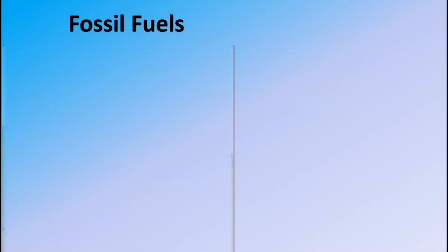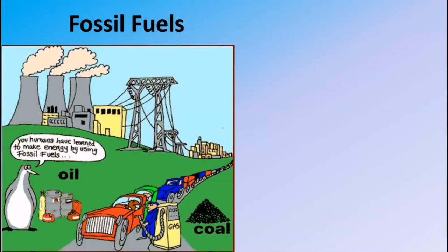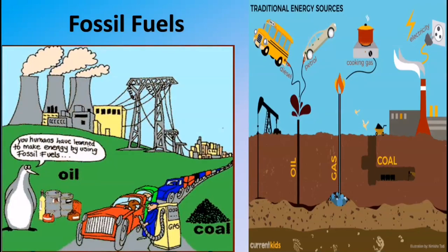Fossil Fuels. Oil, coal, and gas are called fossil fuels. Fossil fuels are found underground. Thermal power is produced by burning fuels such as coal, gas, and oil. Much of the electricity produced in the country is produced by thermal power plants.